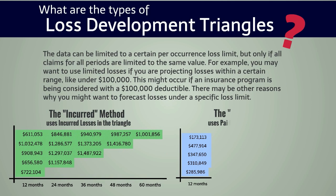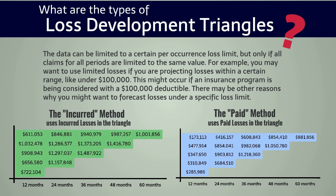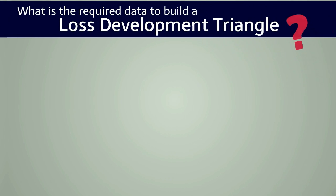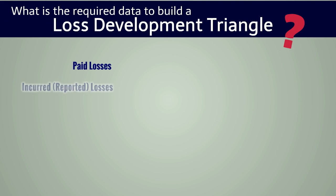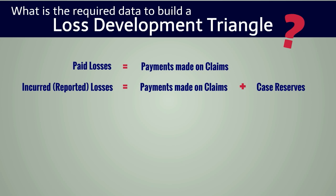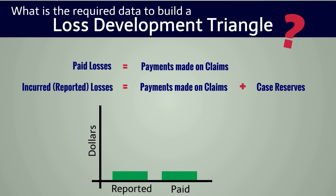Here we see the first step of the incurred loss method and the paid method. On the left we have incurred losses in the triangle and on the right we have paid losses in the triangle. As you would expect, the incurred losses are higher than the paid amounts as shown in the two triangles. Paid losses are simply the payments made on the claims, and incurred losses are the payments made on the claims plus the case reserves. If you have any reserves, the reported amount should be greater than the paid amount, as we saw in our sample incurred and paid loss development triangles.